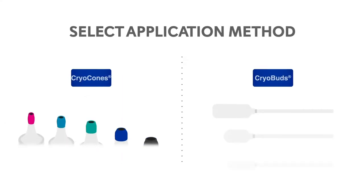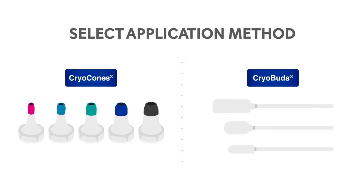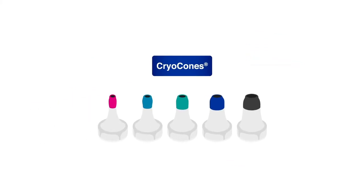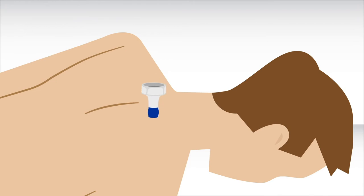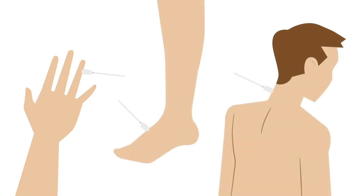There are two methods of application for Veruca Freeze: cryocones and cryobuds. Cryocones are convenient for treating fleshy areas of the body where a tight seal can be achieved. Cryobuds are convenient for treating lesions on bony surfaces and hard-to-reach areas as well as the head, face, and neck.